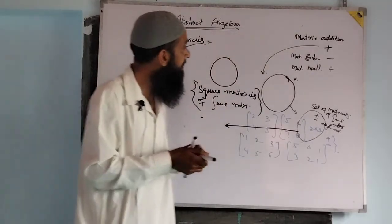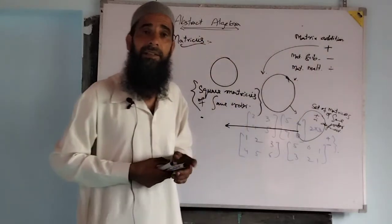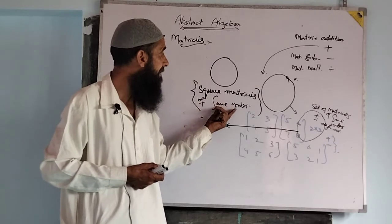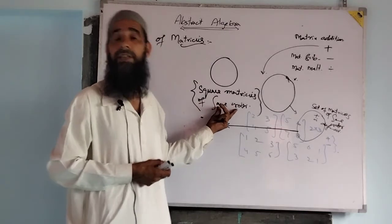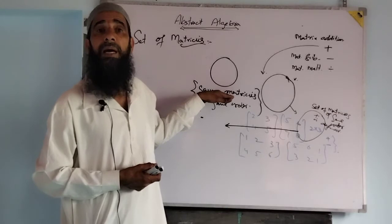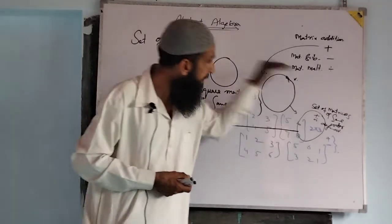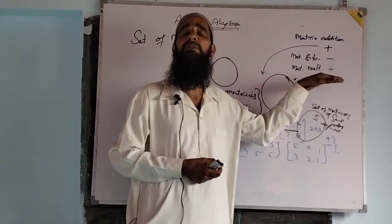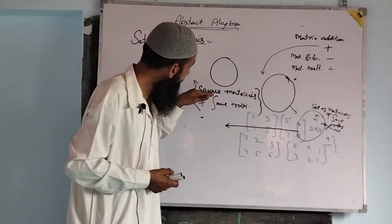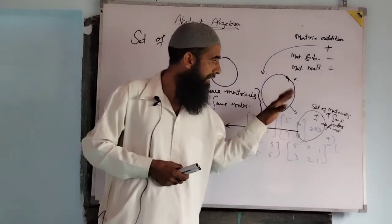For the set of square matrices of same order, what happens with addition and subtraction? Since same order is already satisfied, addition is also a binary operation and subtraction is also a binary operation for the set of square matrices of same order.